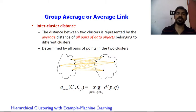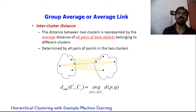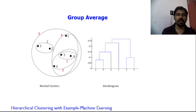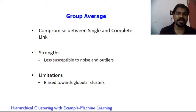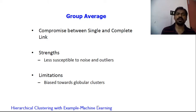The third representation is average link. Here I find the distance between p and q and calculate the average of the two distance values — sum of distances divided by 2 — and use that average to update the distance matrix. The dendrogram is formed similarly. The strength of both complete and average link is that they are less susceptible to noise and outliers, but they are biased towards globular clusters.